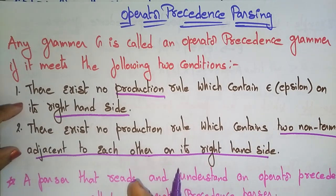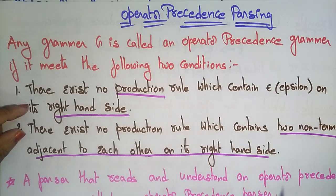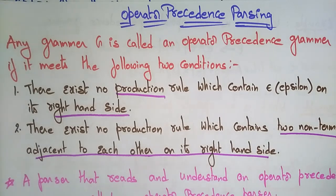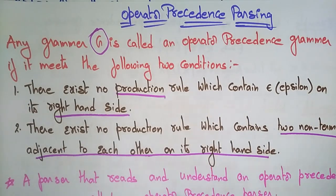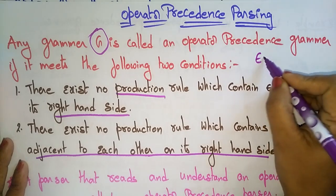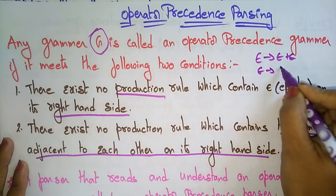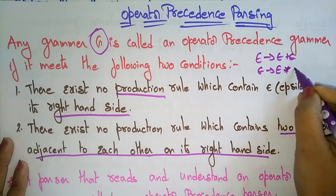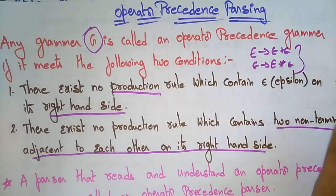If that grammar follows these two conditions, then we can say it is an operator precedence grammar. For example, the grammar E → E plus E and E → E star E follows this form.